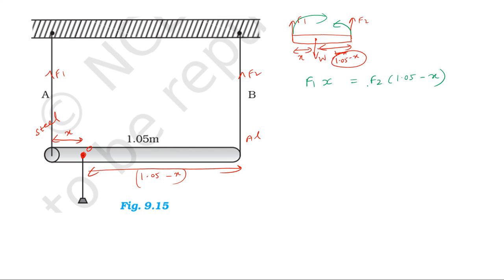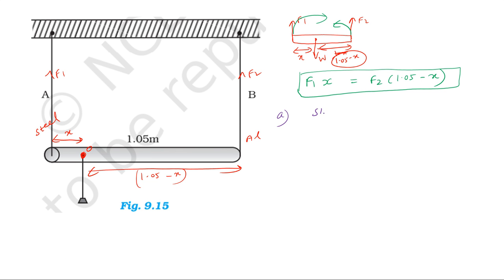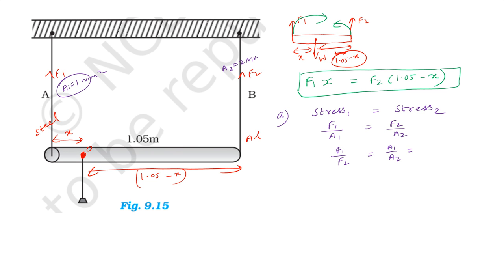Now for problem solving: in the first case, stress in the steel wire is equal to stress in the aluminium wire. So F1 divided by A1 equals F2 divided by A2. Therefore F1 by F2 equals A1 by A2, which gives us 1 mm² divided by 2 mm², so F1 by F2 equals 1 to 2.